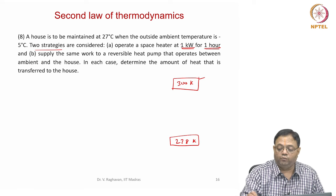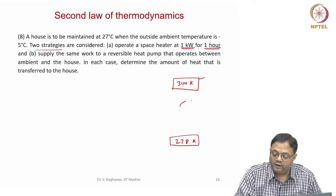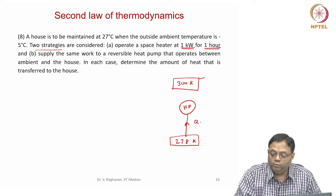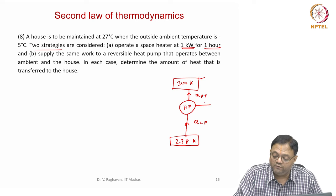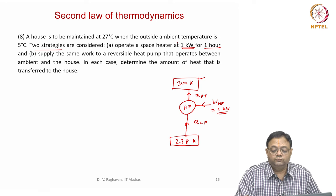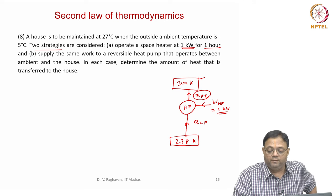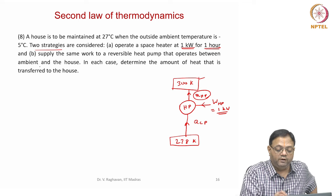The second strategy is to supply the same one kilowatt of work to a reversible heat pump operating between the ambient and the house. The heat pump receives QCP from the cold ambient and rejects QHP to maintain the room at 300 Kelvin, with work input WHP equal to 1 kilowatt. We want to find the heat rejected to the room in each case.